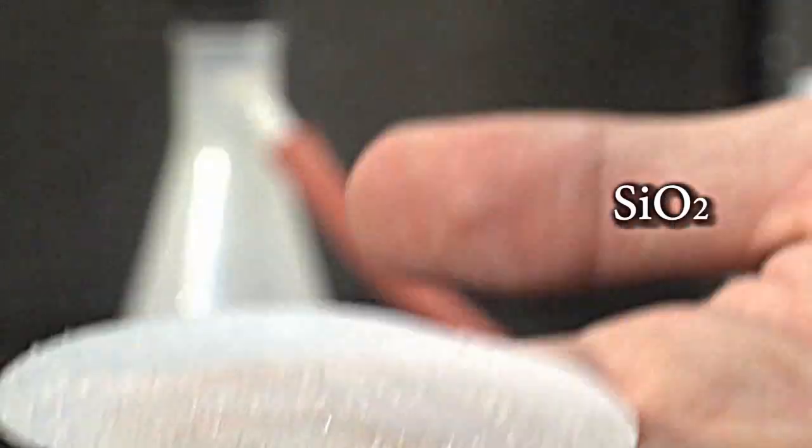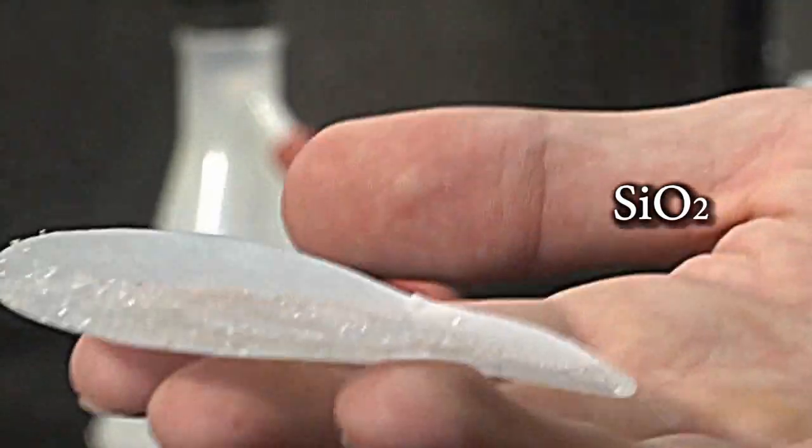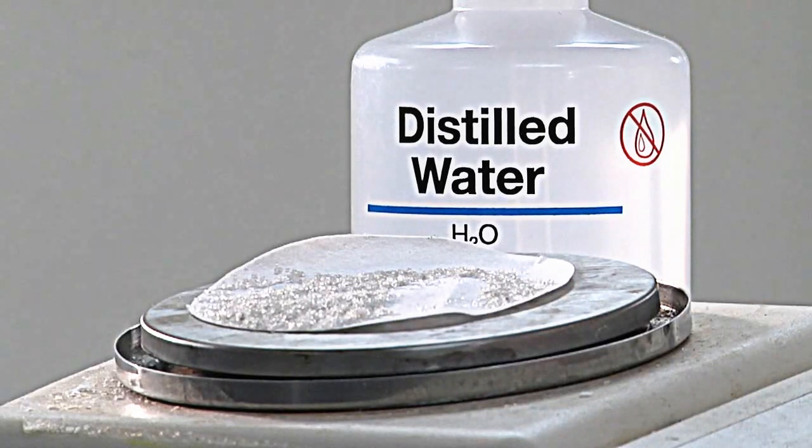You will place it on a watch glass and in an oven to dry. Once the sand has been dried or the silicon dioxide, it can be weighed.